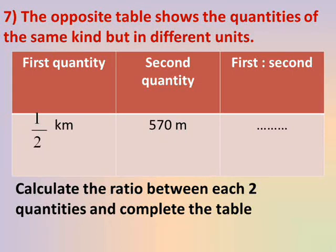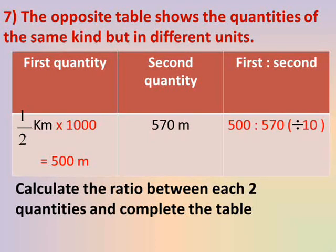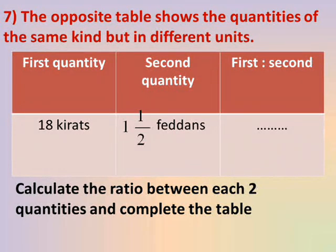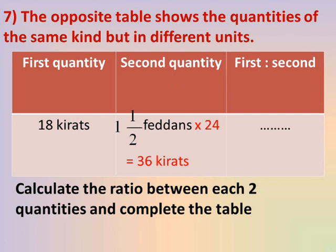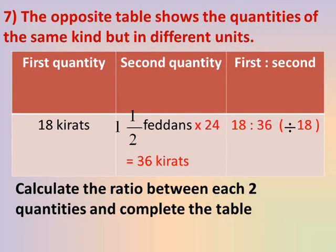Third entry: half kilometer to 570 meters. Convert from kilometers to meters: half × 1000 = 500 meters. Ratio is 500 to 570 meters. Cancel zeros: 50 to 57 — this is already the simplest form. Fourth entry: 18 kirats to 1 and a half feddans. Convert: 1.5 × 24 = 36 kirats. Ratio is 18 to 36. Both divisible by 18: 18 ÷ 18 = 1 and 36 ÷ 18 = 2. Ratio is 1 to 2.